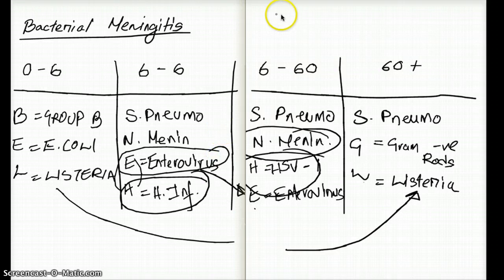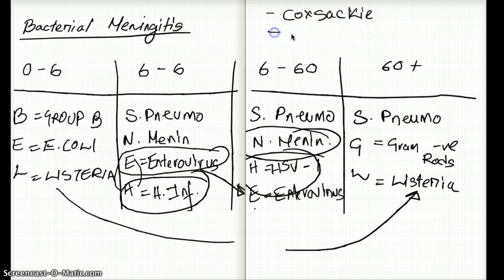Some of the common organisms that fall under the Enterovirus that cause meningitis are going to be Coxsackie, HIV, and HSV-2.